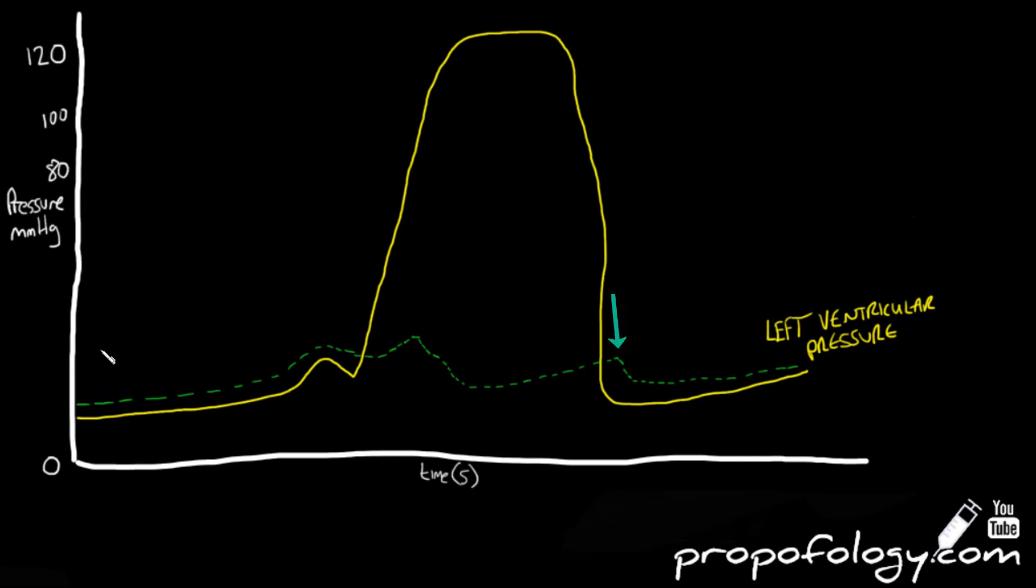The final blip in the atrial pressure line is due to the closure of the aortic valve. This happens because for a short space of time all the valves in the heart are closed so pressure increases in the atrium, but now because the aortic valve is closed you'll get passive refilling of the ventricles and pressure therefore drops again afterwards, ready for the next cycle.